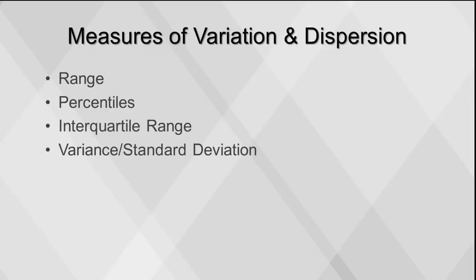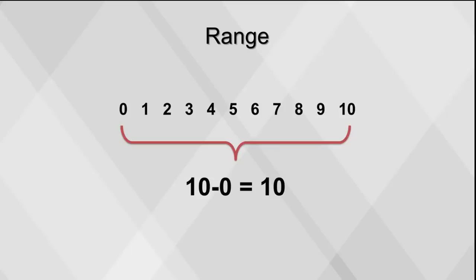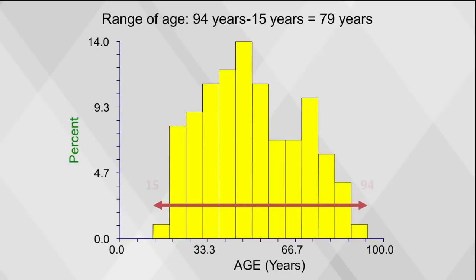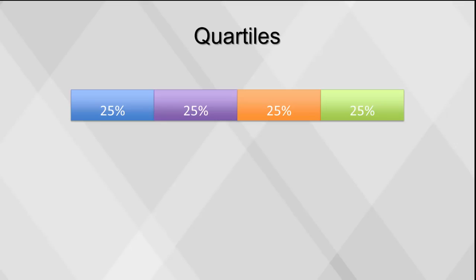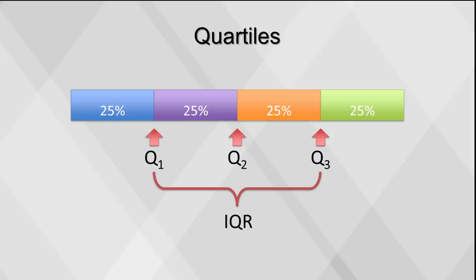There are several measures to examine the spread of the data, including range, percentiles, interquartile range, and variance or standard deviation. The range is the difference between the largest and the smallest value. This histogram shows a minimum value of 15 and a maximum value of 94 — the range is 94 minus 15 equals 79. Another measure of spread is the value of each quartile: we take the total number of data points and divide them into four parts, and the value corresponding to the endpoint of each part is the quartile value.